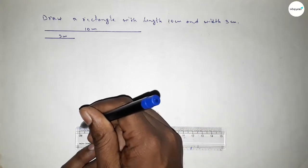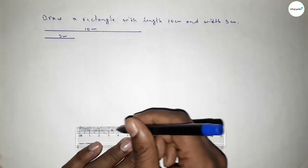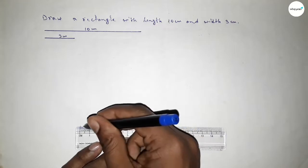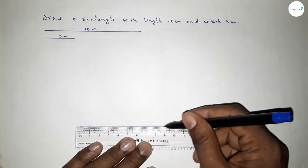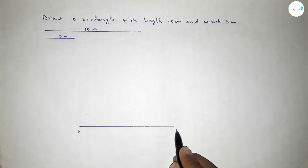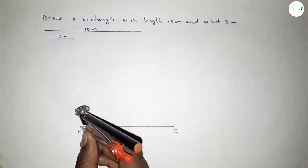Now we have to draw a line of length 10 centimeter. Starting from 0: 1, 2, 3, 4, 5, 6, 7, 8, 9, 10. Drawing a line of length 10 centimeter, taking here point B and here point C. Now we have to draw a 90 degree angle on point B.